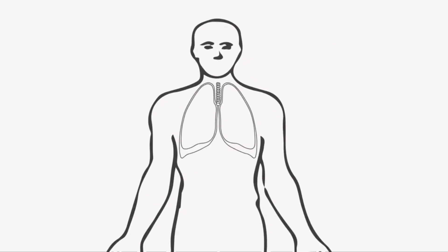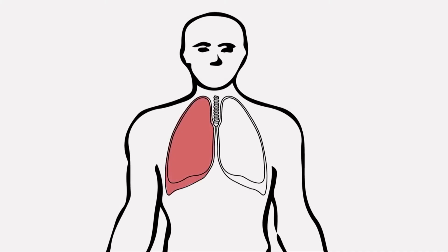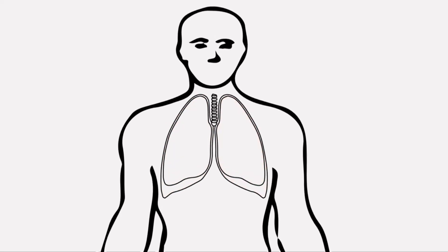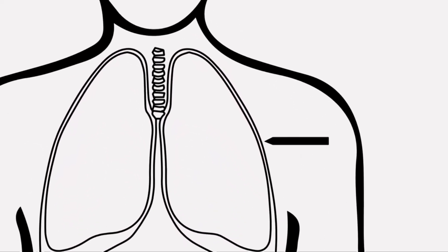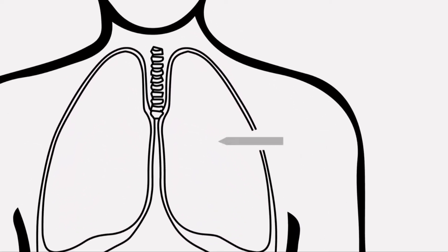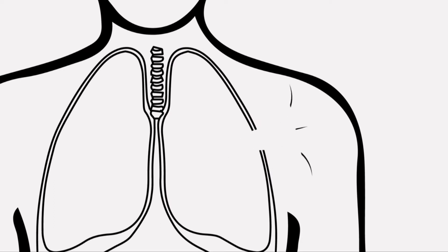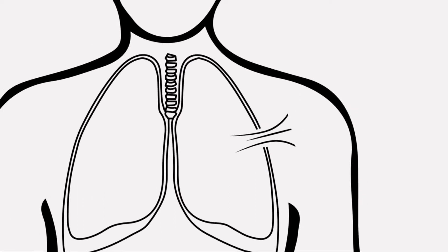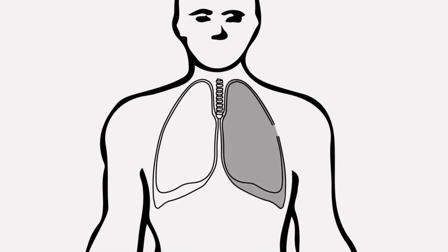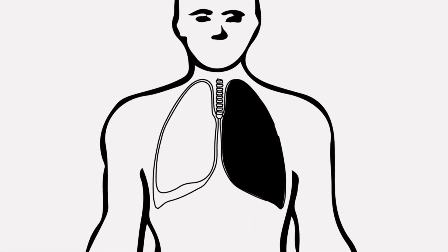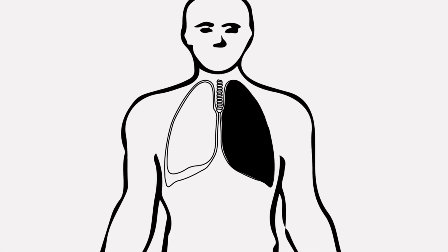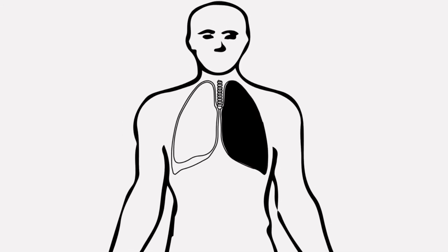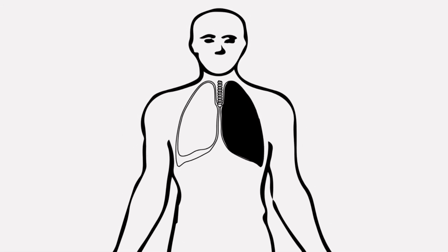Each of your lungs are enclosed in a separate airtight area within the chest. If an object punctures the chest wall, air may be allowed to enter the chest. If air enters into one of the formerly airtight areas, the lung within that area begins to collapse. Any degree of collapse interferes with the casualty's ability to breathe and reduces the amount of oxygen available for the body to use.